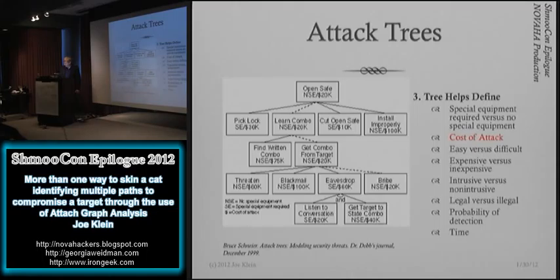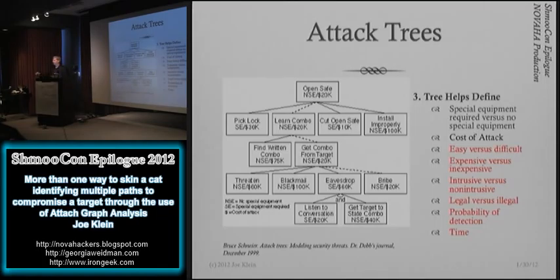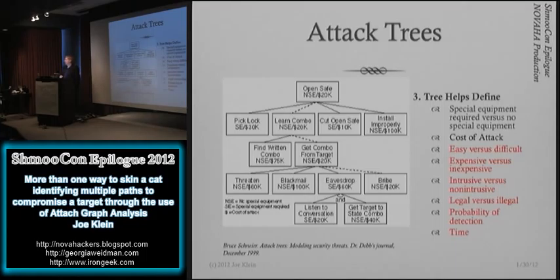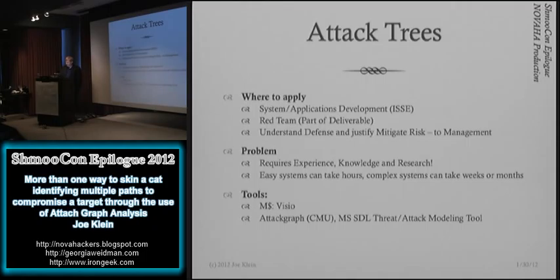You can also use ease and difficulty of implementation. Some things are easy or hard. What's the expense versus inexpense? You may be given a budget to mitigate these issues. Invasive versus non-invasive — are you going to have to physically go into the facility and plug something in, or are you going to drop a phishing email? Is it legal or illegal to do it? What's the probability of detection if you're trying to be stealthy? And what's the time period — will it take a day, a few milliseconds, or a year?